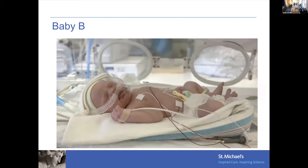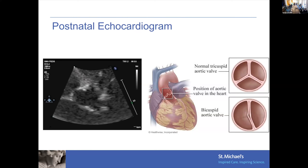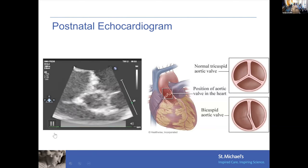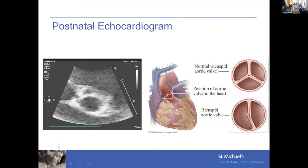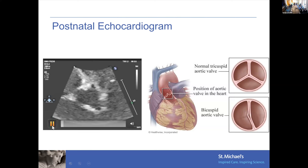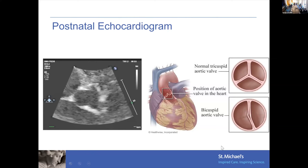The baby was born a little early, pre-term, admitted to the NICU with some respiratory support. A postnatal echocardiogram was also performed, because while the fetal echo picks up major congenital heart defects, things like a bicuspid aortic valve are not feasibly seen in utero. Here is the parasternal short-axis view zoomed up to the aortic valve — it's a bicuspid aortic valve, which is common in girls with Turner syndrome.